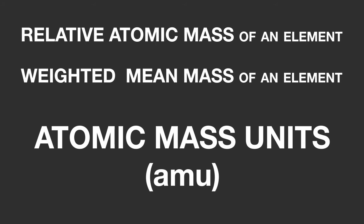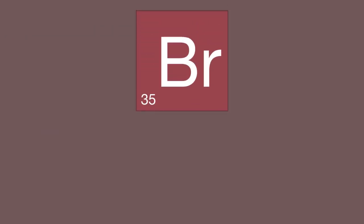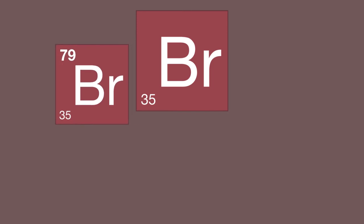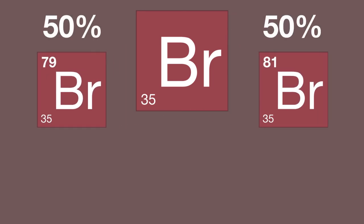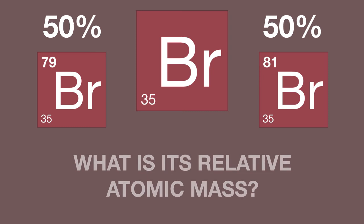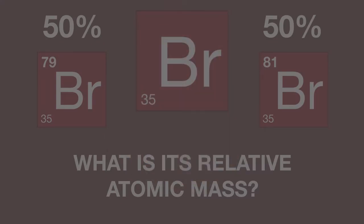Here's another example for you. A sample of bromine contains 50% bromine-79 and 50% bromine-81. What is its relative atomic mass? Pause the video — you may be able to work this out straight away. If not, write it down as in the chlorine example.